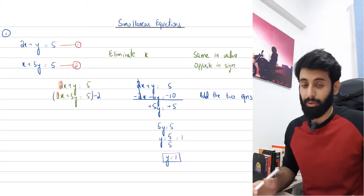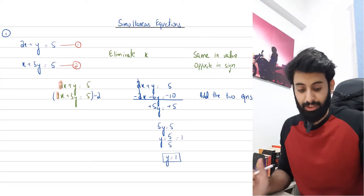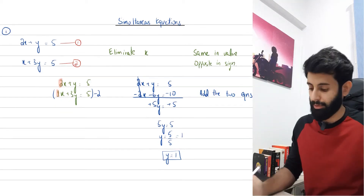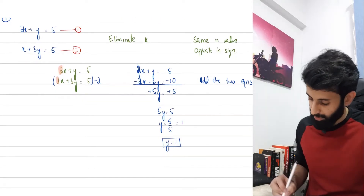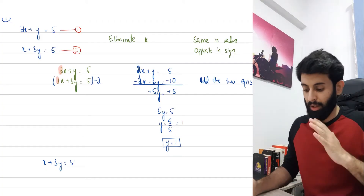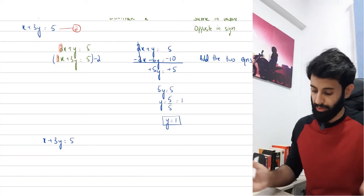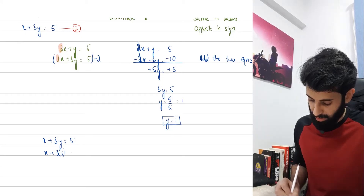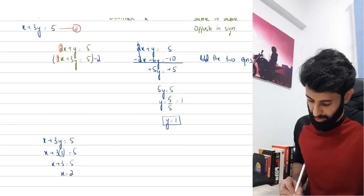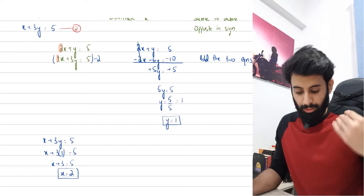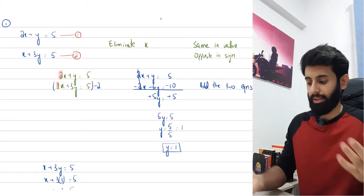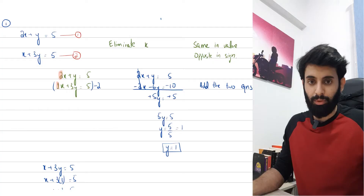At this point, don't think the question is finished — you still have to find the value of x. Pick any one of the two equations, plug in the value of y, and find x. I'm going to pick equation number two: x plus 3y equals 5. So x plus 3 times 1 equals 5, meaning x plus 3 equals 5. Take 3 to the other side: x equals 5 minus 3, so x equals 2. You have your two answers: x is 2 and y is 1. I encourage you to plug these values back in to verify both equations.